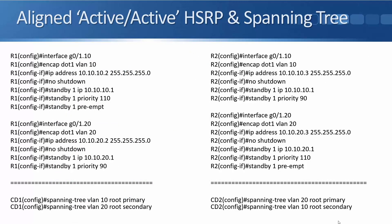R1 is going to be the HSRP active for VLAN 10. I'm using router-on-a-stick sub-interfaces here. On R1, I've got interface gig 0/1.10, encapsulation dot1Q VLAN 10, IP address 10.10.10.2, no shut, standby 1 IP 10.10.10.1, standby 1 priority 110, and standby 1 preempt. On R2 for VLAN 10, I give it IP address 10.10.10.3, it's got that shared HSRP virtual IP address of 10.10.10.1, and I give it priority 90. So R1 is going to be selected as the active HSRP gateway for VLAN 10.